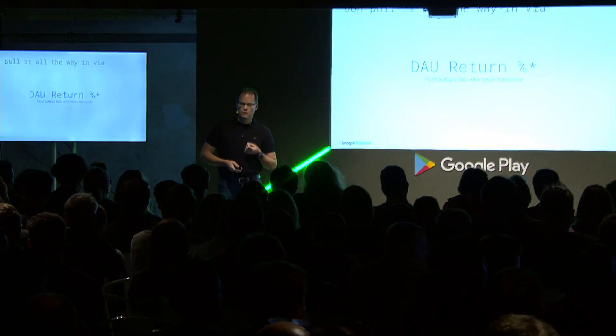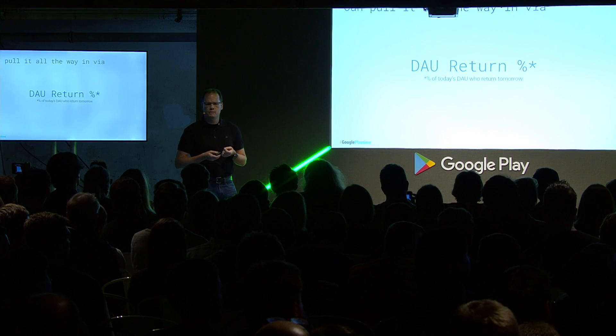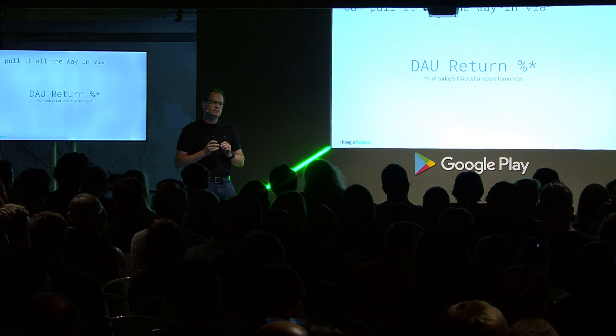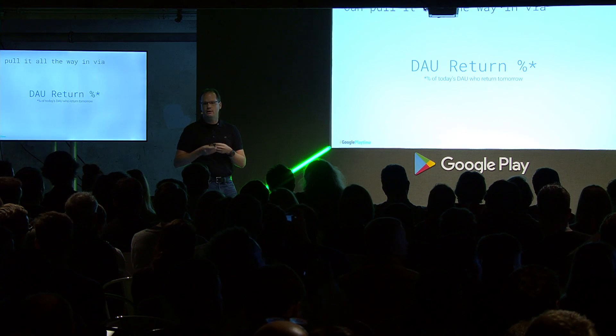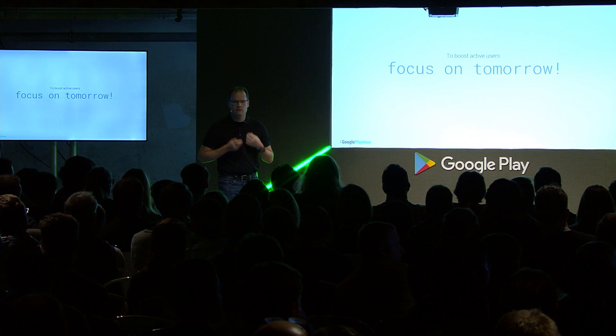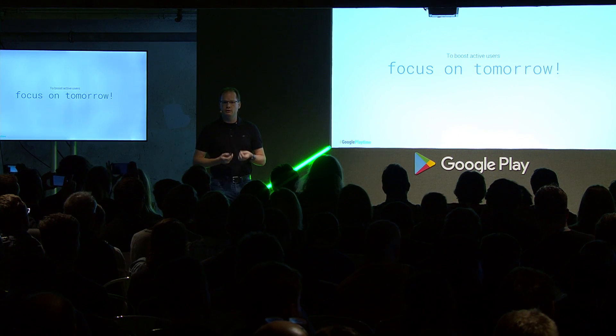We can actually pull it all the way in. This is a metric I started working with at Google Play — not something I'd ever used on the developer side — and it looks at the percent of today's DAU who come back tomorrow, as a loose proxy for churn, to understand how engaged our users are. If we put this DAU return percent on the x-axis and the DAU-WAU ratio on the y-axis, we again see a positive linear relationship. This tells us that to increase our stickiness factors, the most important thing to do is focus at the daily rate. Daily versus monthly, you can run 28 to 30 times as many tests. Fundamentally, the most important thing you can do to boost your active users and engagement is focus on tomorrow.